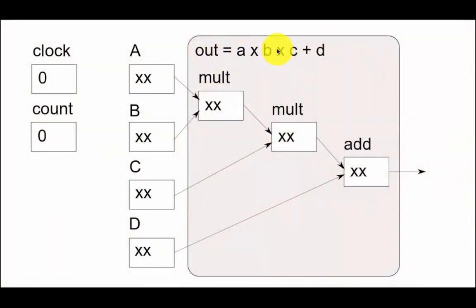Hello everyone, I wanted to explain pipelining in FPGAs in this video. To do that, I've got this simple sum here where we've got A times B times C plus D. And here we've got our A, B, C, D registers, and a clock and a count.